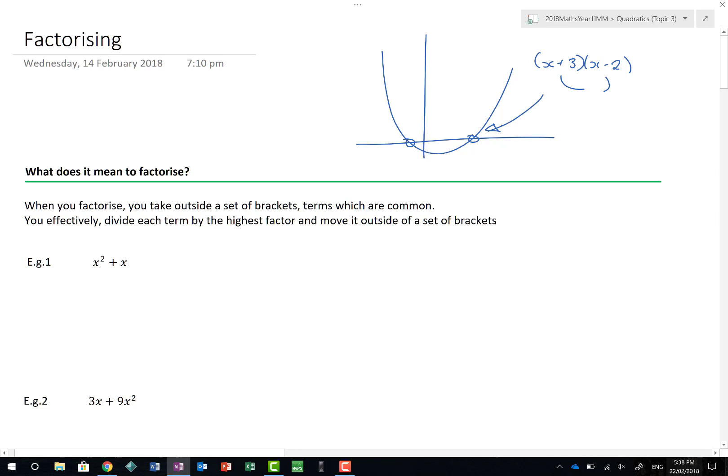If we can turn a quadratic, which we know has something like 3x squared plus 4x minus 6, into this form here, then it's going to make our life a lot easier. The end game is to be able to turn a quadratic into some form of two brackets to then let us find these crossing points.